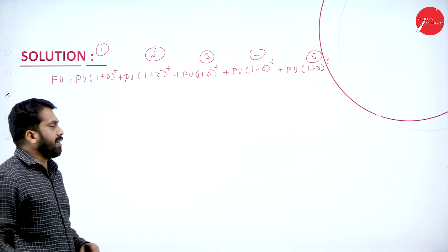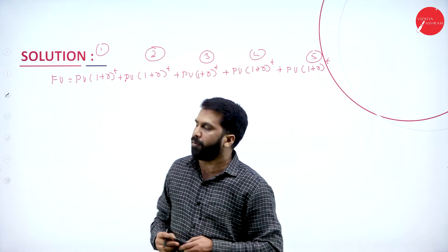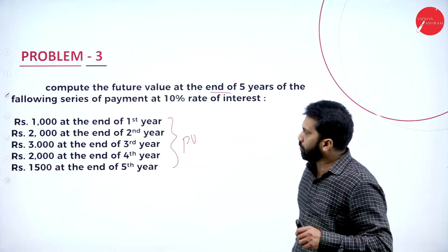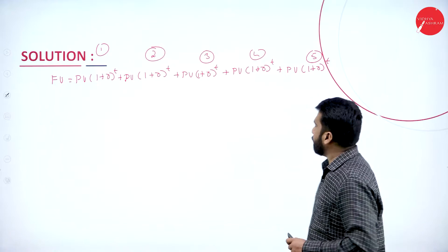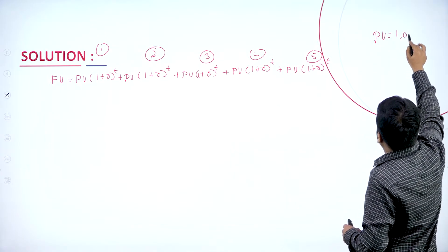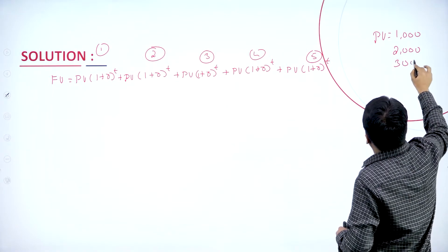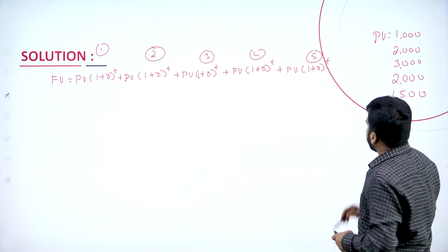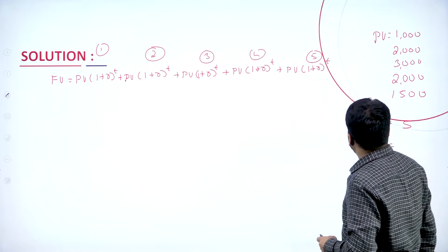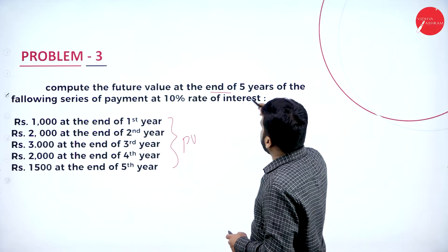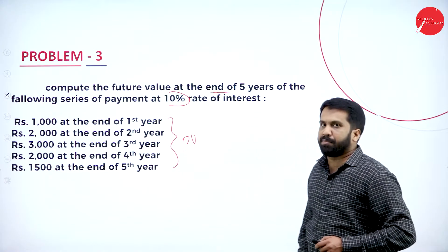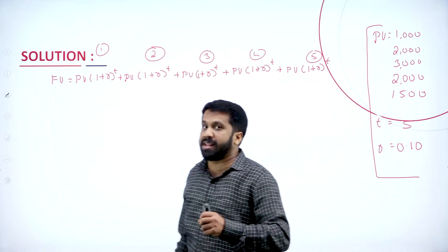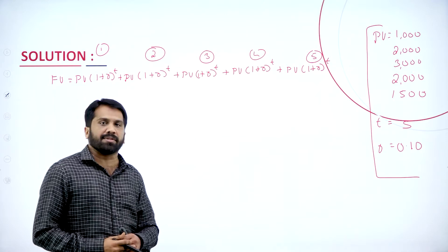Before that, let's understand the information given in the problem. The present values are 1,000, 2,000, 3,000, again 2,000, and 1,500. Your T means time — this is a 5-year problem. Rate of interest in this problem is 10%, which we write as 0.10. These are the informations already available in the question, and according to that we are supposed to calculate.